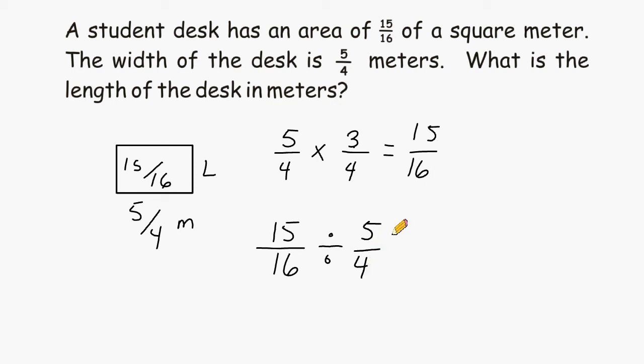Now, when dividing fractions, the first fraction should remain as it is, and the division sign should be turned into a multiplication sign, and we write the reciprocal of the second fraction. So we're going to turn 5 quarters into 4 fifths.